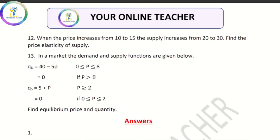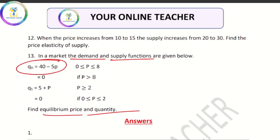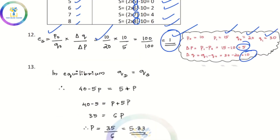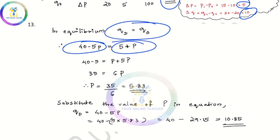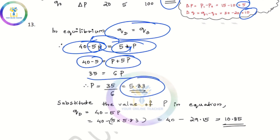The last question: we have a market demand function and supply function. Equilibrium price and equilibrium quantity. We have two equations: Qd equals 40 minus 5p, and Qs equals 5 plus p. At equilibrium, Qd equals Qs. So 40 minus 5p equals 5 plus p. Therefore 35 equals 6p, so P equals 35 by 6. That is the equilibrium price.